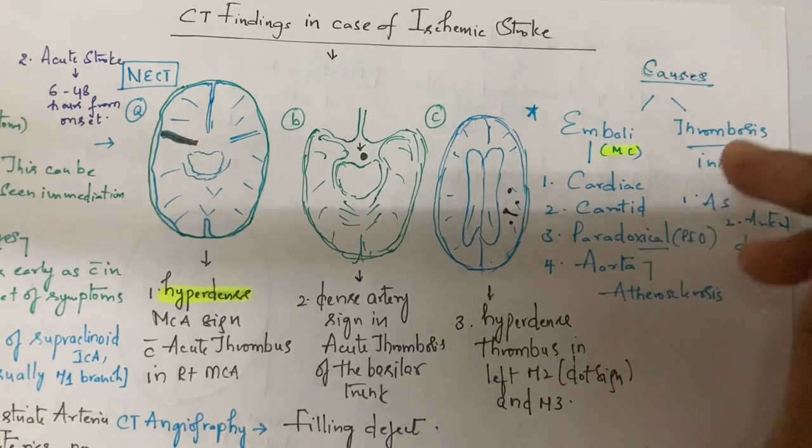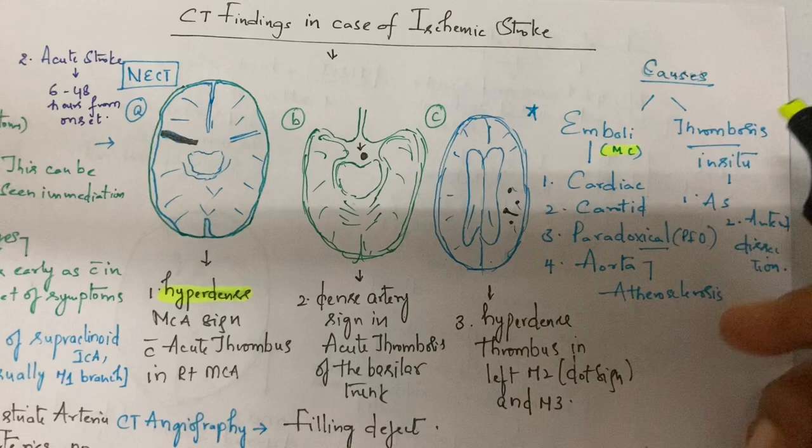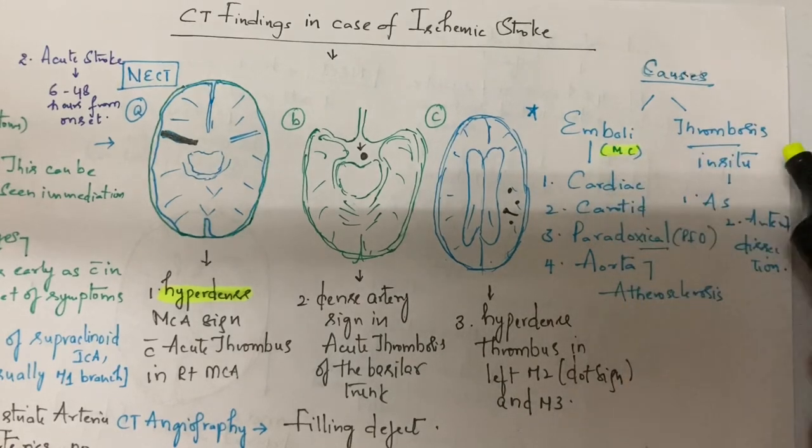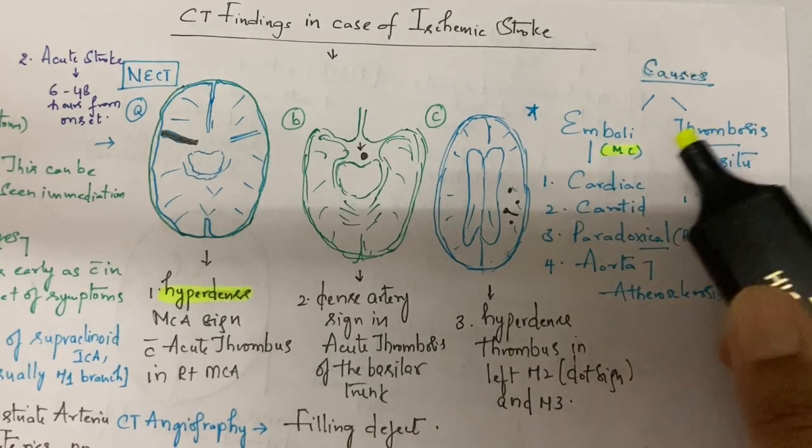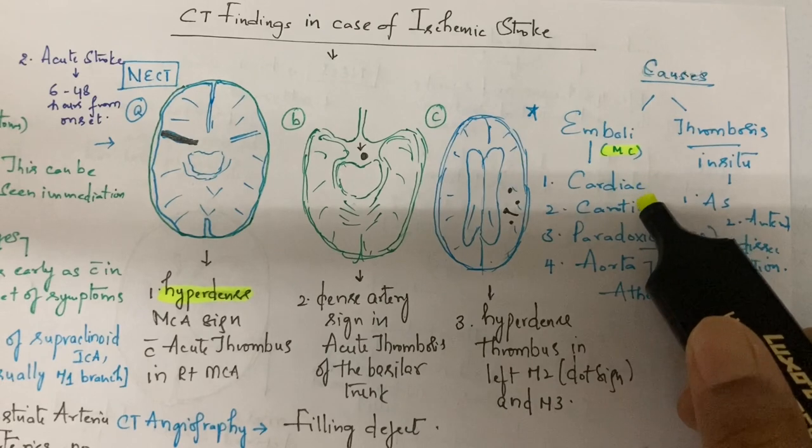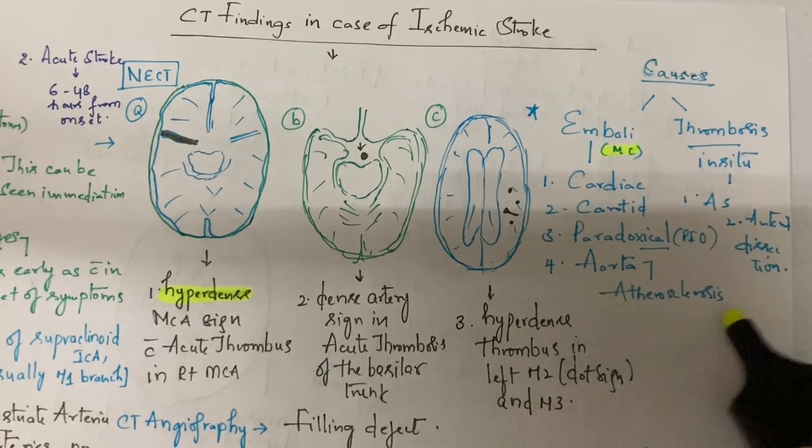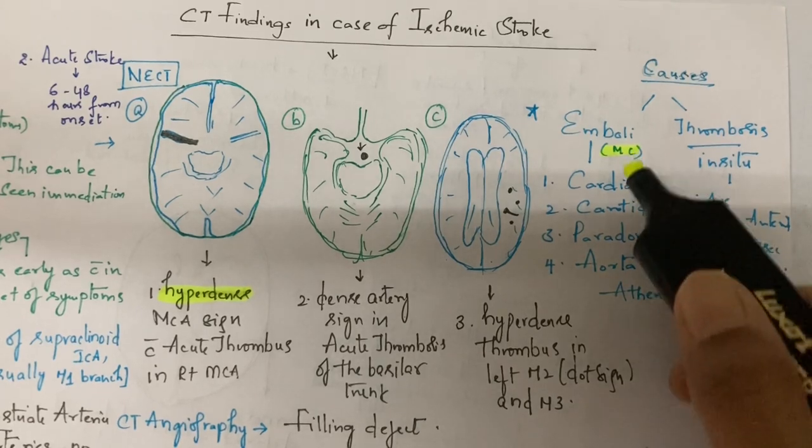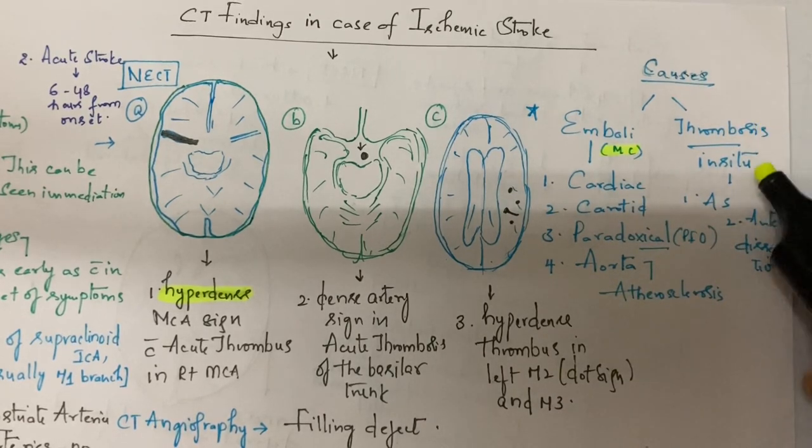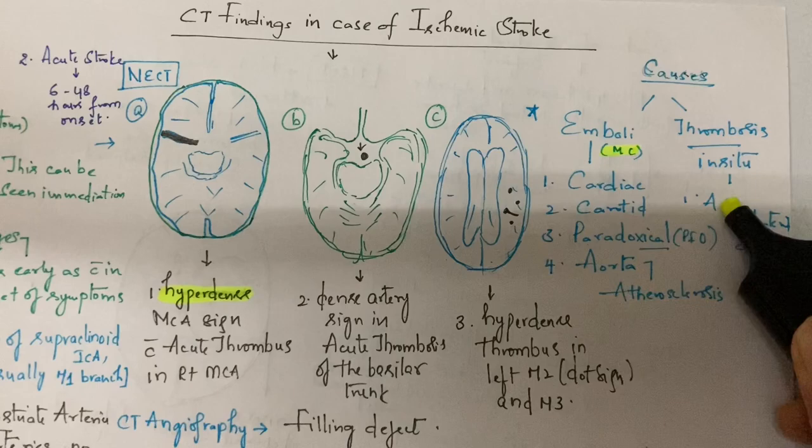First, write a few sentences about the causes. Emboli are the most common cause; the other is thrombosis in situ. Emboli arise from the heart, carotid, paradoxical from patent foramen ovale, and aorta atherosclerotic disease. Thrombosis in situ occurs due to atherosclerosis or arterial dissection.